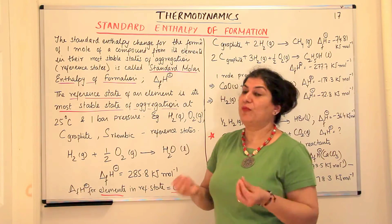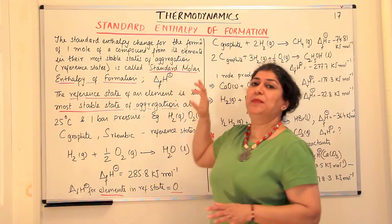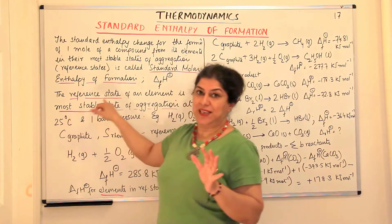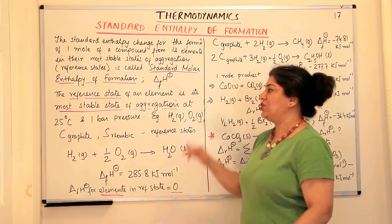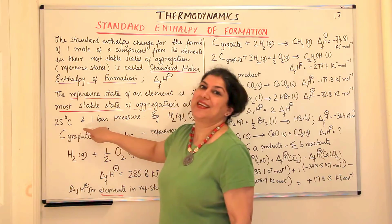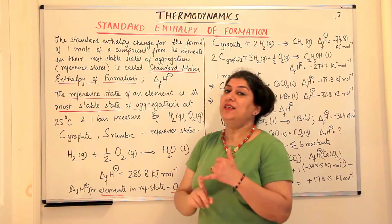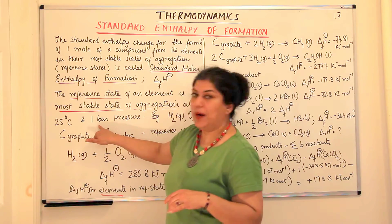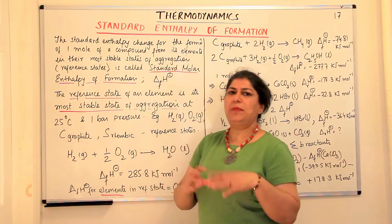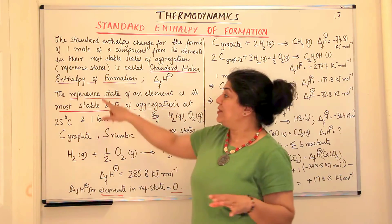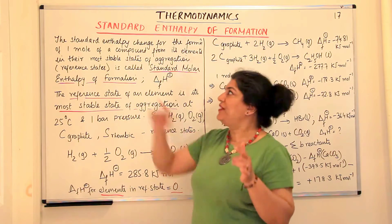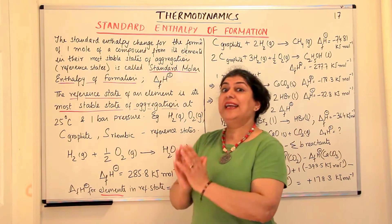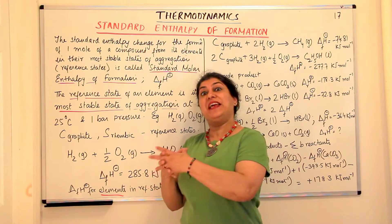Formation is the kind of reaction taking place — formation of a compound. When it says that the elements should be in their most stable states of aggregation, also known as reference states, what does the reference state mean? The reference state of an element is the most stable state of aggregation at 25 degrees Celsius and one bar pressure. You remember the standard conditions — one bar pressure, the substance is in its purest form and the temperature can vary. But reference state is a little different: here the temperature is also fixed at 25 degrees Celsius, and whatever aggregate form.